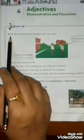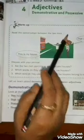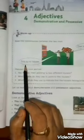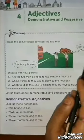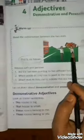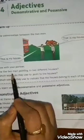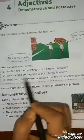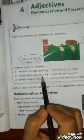Now, read the conversation between the two men. In this picture you are seeing, this man is saying 'this is my house,' and that man is saying 'that is my house.' Discuss with your partner. There are two men pointing to two different houses. Which words do they use to point to the houses?